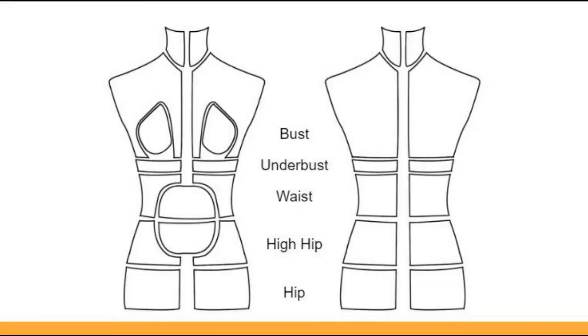After analyzing existing products and the needs of seamstresses and tailors, six measurements were selected for FormFit, which include bust, underbust, waist, high hip, hip, and stomach. The dress form will be constructed from 24 panels with internal gears and motors.